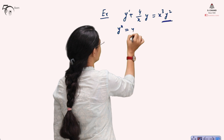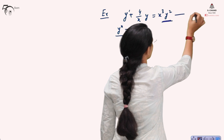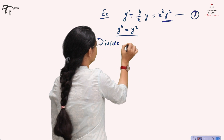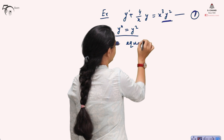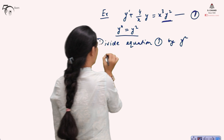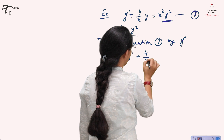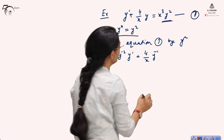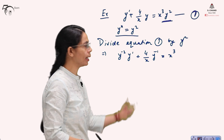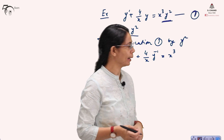Call the original equation number 1. Step 1: divide equation 1 by y². It becomes: y^(-2) y' + (4/x) y^(-1) = x³. This is step 1 — dividing both sides of the differential equation by y^n.